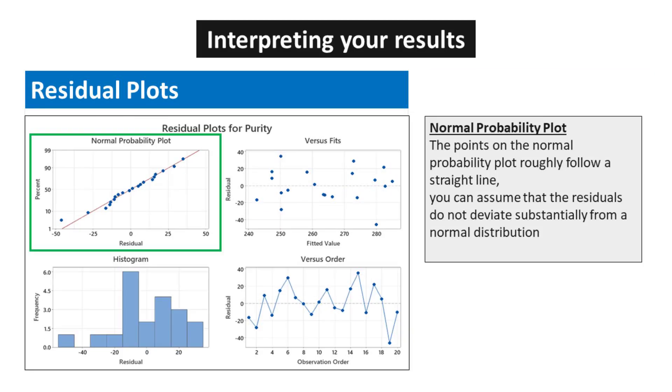For Normal Probability Plot, the points on the Normal Probability Plot roughly follow a straight line, so you can assume that the residuals do not deviate substantially from a normal distribution.